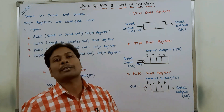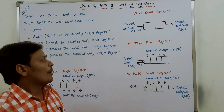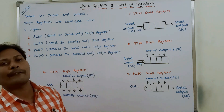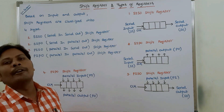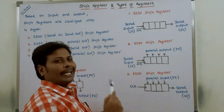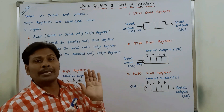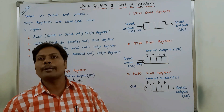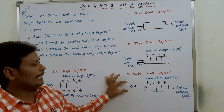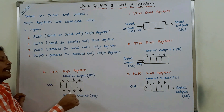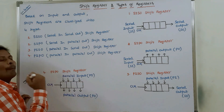For PISO, data enters within a single clock pulse but leaves in serial fashion taking N clock pulses. For SISO, data enters in serial fashion taking N clock pulses and also leaves in N clock pulses. For SIPO, data enters serially in N clock pulses but leaves in parallel within a single clock pulse. For PIPO, both input and output occur within a single clock pulse. If N equals 4, SISO, PISO, and SIPO each take 4 clock cycles for their serial operations, while PIPO requires only a single clock pulse.